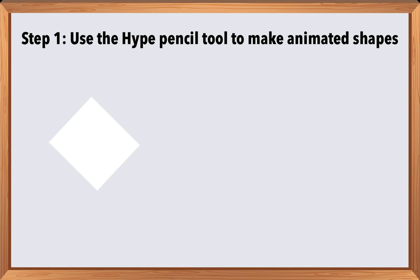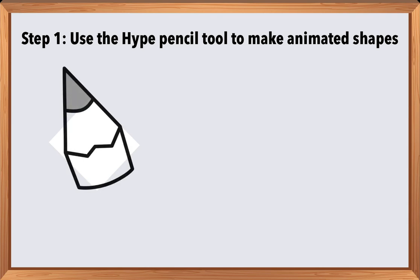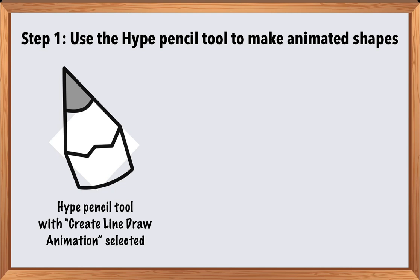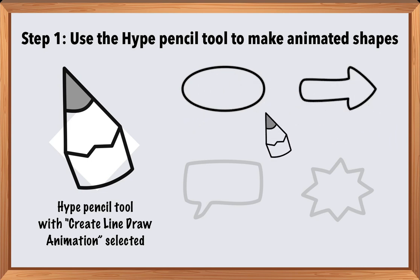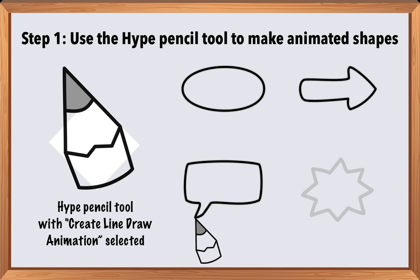There are a few key skills you need to know to make explainer video graphics in Hype. The first one is knowing how to harness the pencil tool's power to animate vector shapes. Using the pencil tool with the create line draw animation option selected allows you to draw or trace any number of shapes. After using the pencil tool, you will probably need to fine-tune the underlying vector path to clean it up. But once you do, the end result is an animated vector path with a timeline attached, useful for drawing illustrations and animating handwriting.